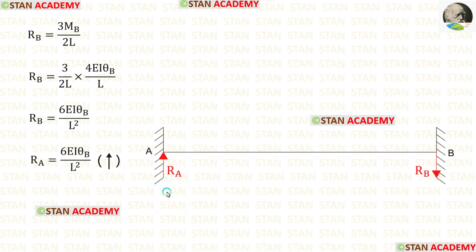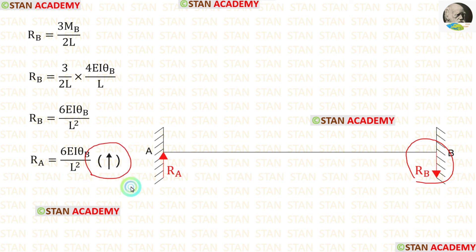Now let us find RA. RB is acting downwards, so RA should be acting upwards. Since there is no load in the beam, the magnitudes of RA and RB will be the same, but they act in opposite directions.